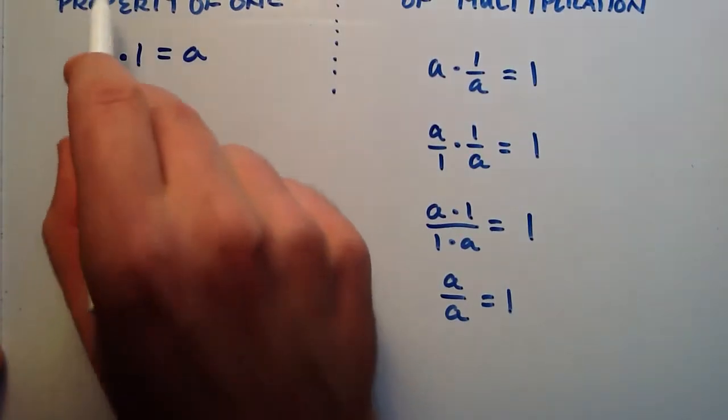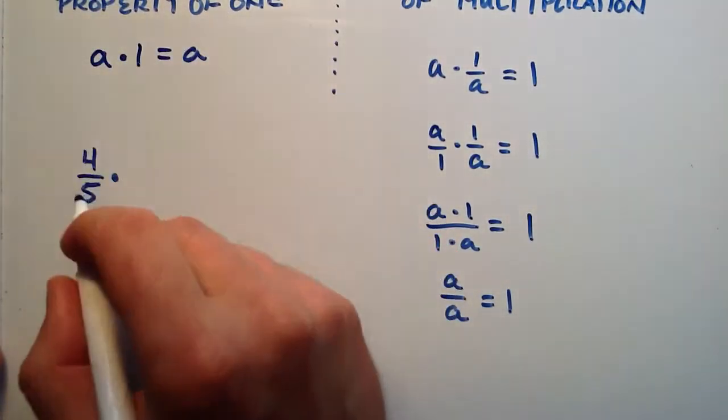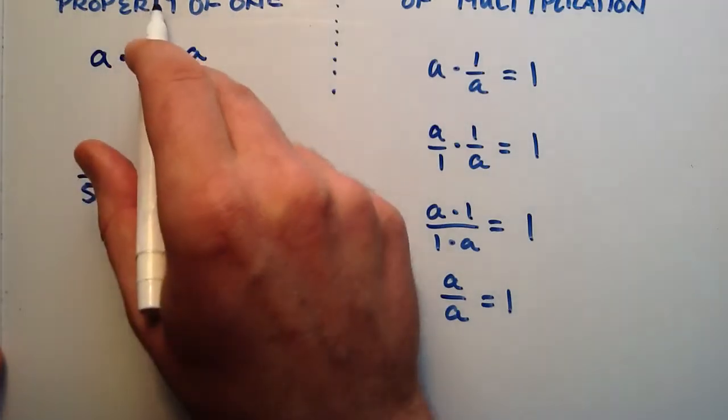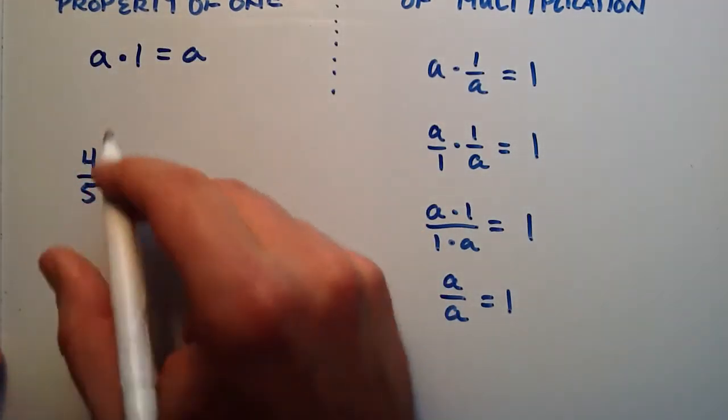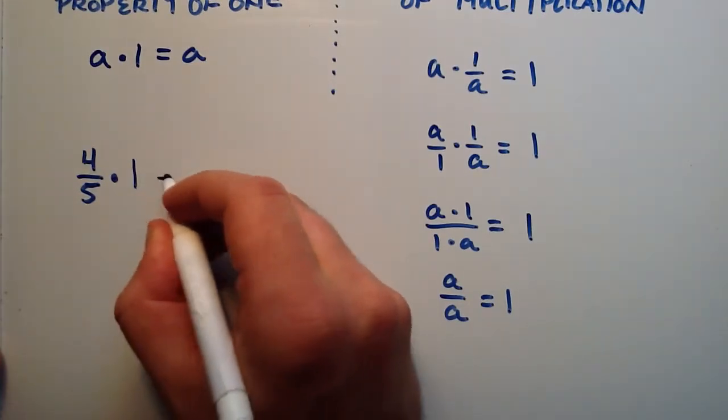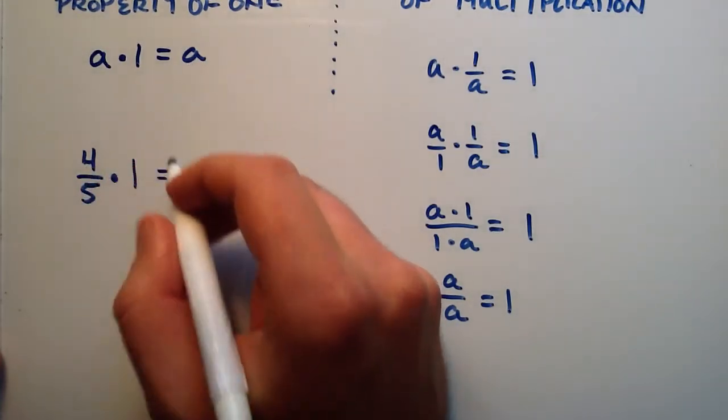So basically, with the multiplication property of 1, 4 fifths would be our a, and we multiply that by a 1. And that says that it equals a, which is our 4 fifths.